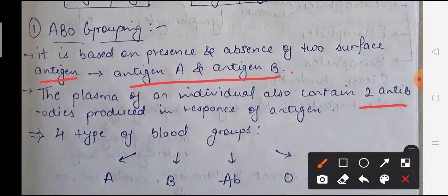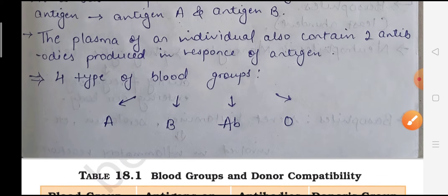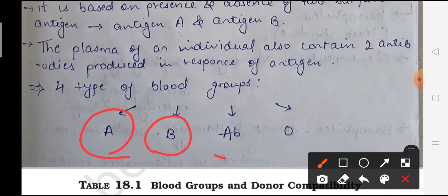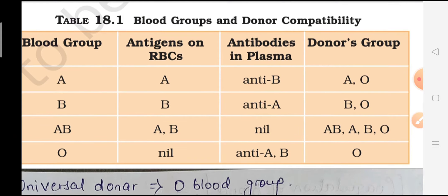The plasma of any individual also contains two types of antibodies, and these antibodies are produced in response to antigens. When blood transfusion is needed, we cannot give just any blood group to any individual - we must first match the blood group. There are 4 types of blood groups: A, B, AB, and O. These four types of blood groups are seen in human beings.